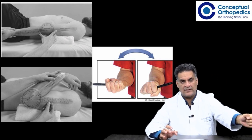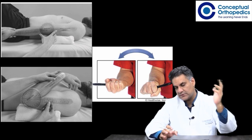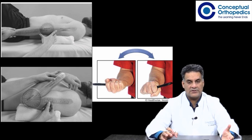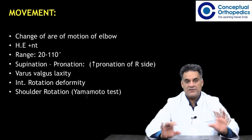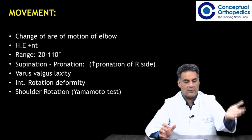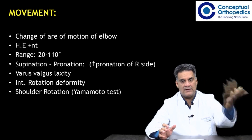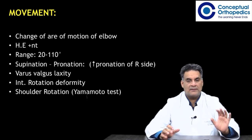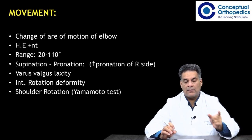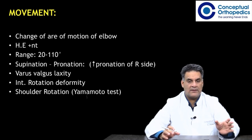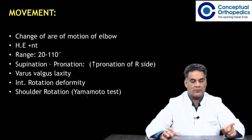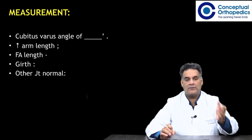For flexion and extension, patients usually have some restriction of flexion and some extra extension due to an extra-articular component. Do talk about pronation and supination and compare how the arc of movement has changed. Some patients will have hyperextension — mention the range, for example from 20 degrees of hyperextension to 120 degrees of flexion. Some patients have changes in pronation and supination. Talk about laxity, internal rotation deformity, the amount of shoulder rotation, and the Yamamoto test. Do talk about the carrying angle.